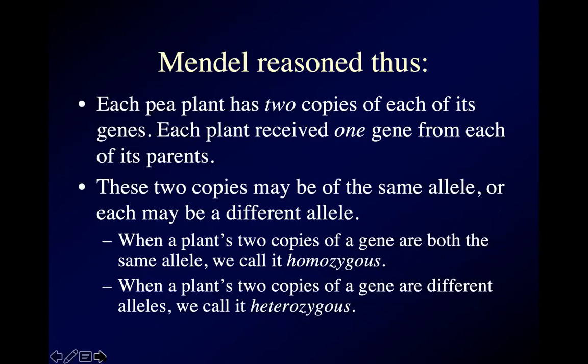Every pea plant has two of each of its genes because it got one from its male parent and one from its female parent. Each plant will pass on one of each pair to each one of its offspring. Same is true for you. You have about 18,000 genes — two of each, so about 36,000. One of each pair you got from mom, the other from dad, and you will pass on one of each pair to each of your children.